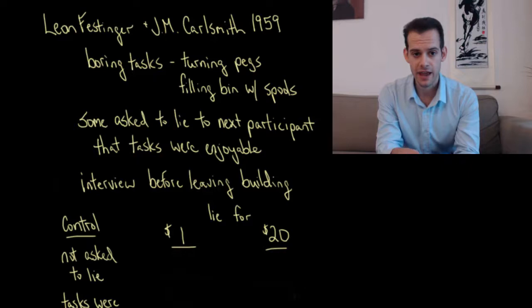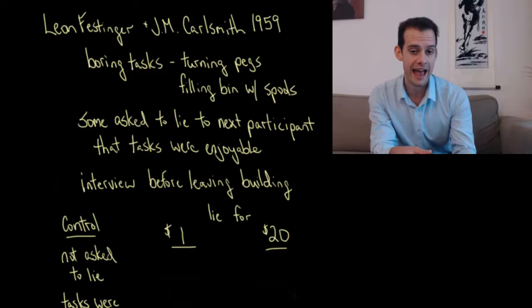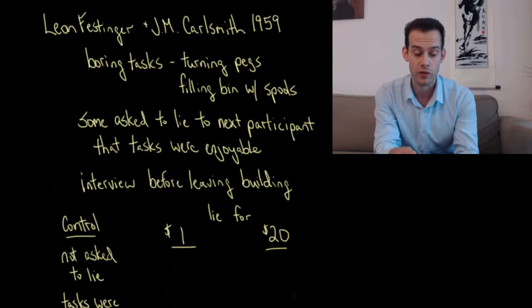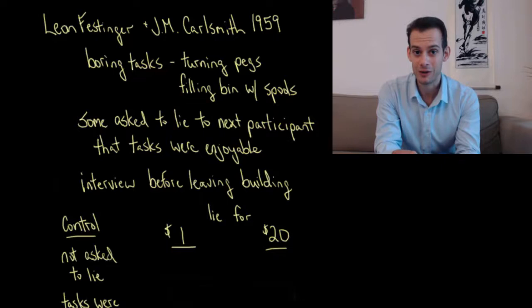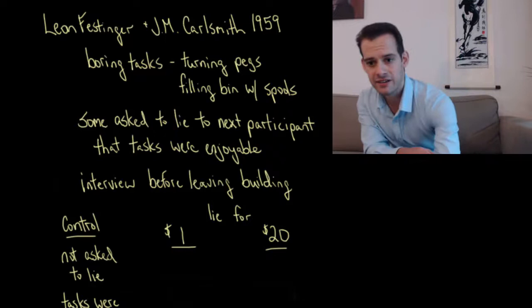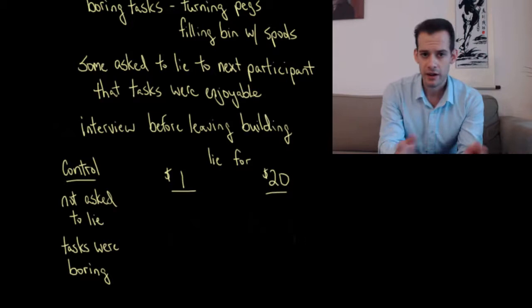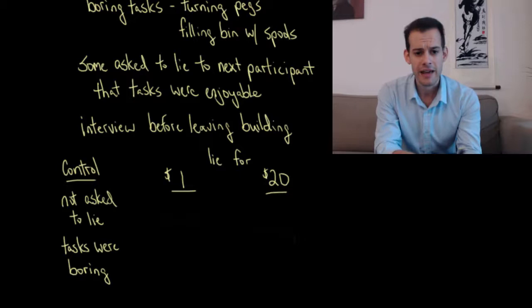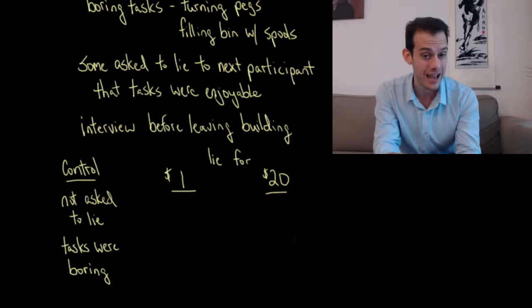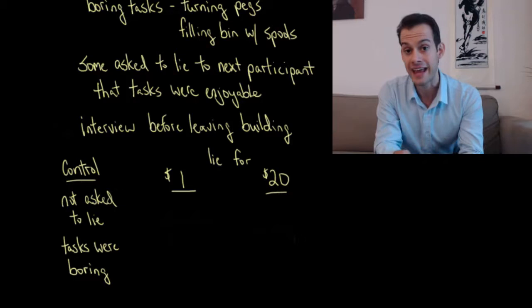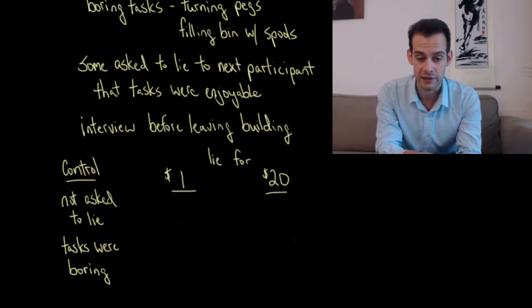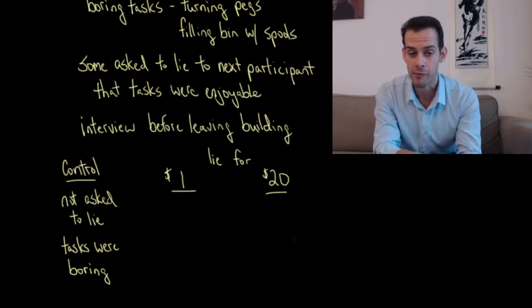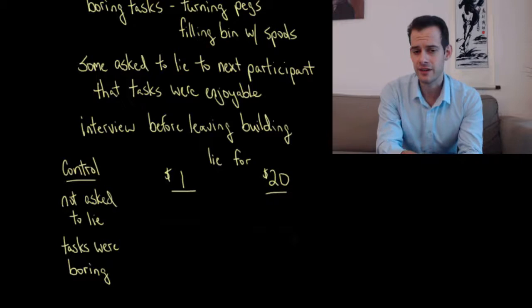A control group was asked in a follow-up interview what they thought of the experiment — how useful were the tasks — and they said it was boring, had no scientific merit, and seemed like a waste of time. But some participants were asked to lie. Before leaving the lab, the researcher said an urgent meeting had come up and asked if they could give instructions to the next participant waiting outside, telling them the task was fun and that they had a good time — so that person would stick around and do it. For this help, participants were paid either $1 or $20, which in 1959 was a fair amount of money.